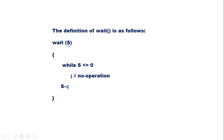Wait takes the semaphore variable S as argument. While S is less than or equal to zero, perform no operation — the process will stay inside the while loop. Once the condition becomes false, control exits from the while loop and the value of the semaphore variable S is decremented by one.